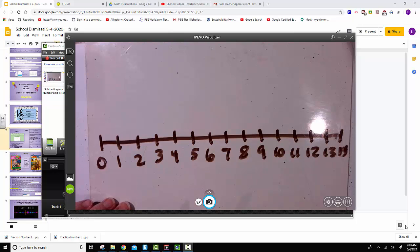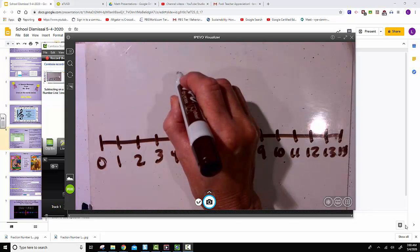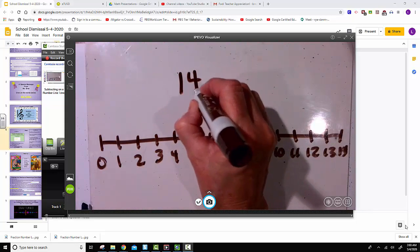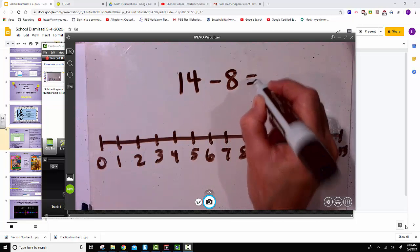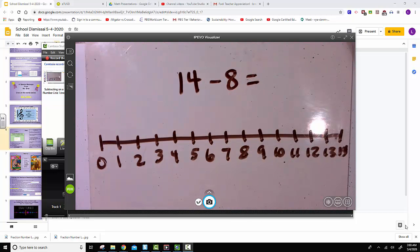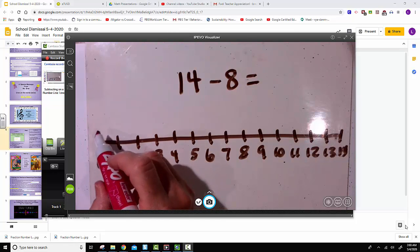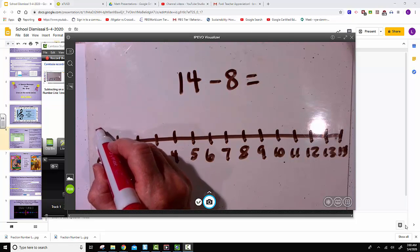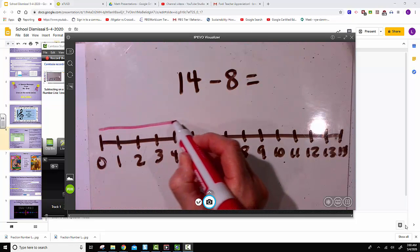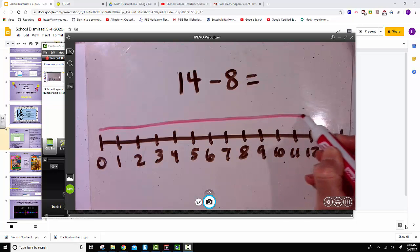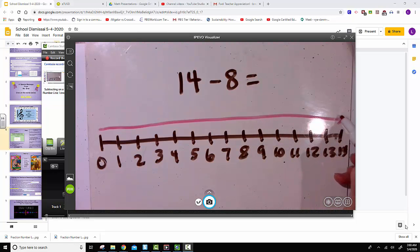This time let's try an example with slightly higher numbers. We will subtract 8 from 14. So again we start at 0 and we move to the minuend which is 14, and now we must subtract the subtrahend which is 8.